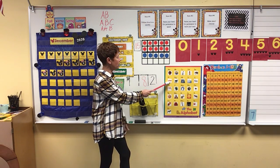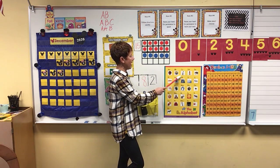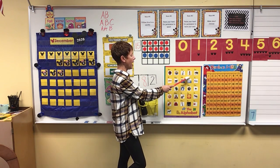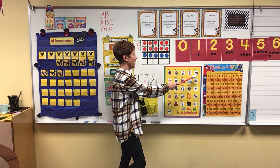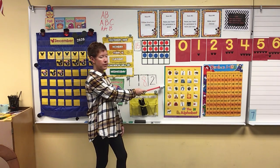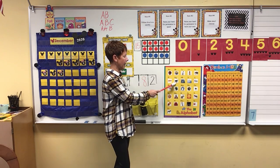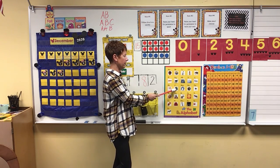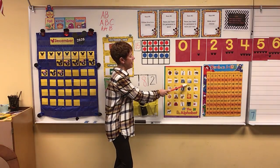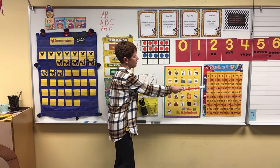F — fish. G — goat. H — house. I — igloo. J — jump rope. K — kite. L — leaf. M — magnet. N — nest. O — ostrich.